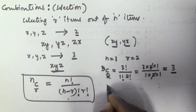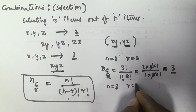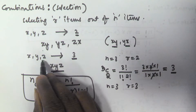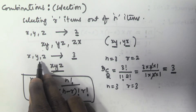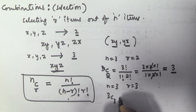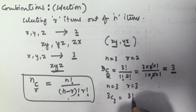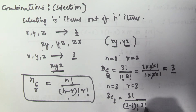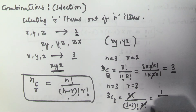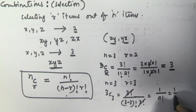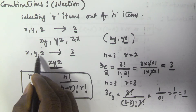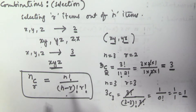Here n is 3 and r is also 3 because we are selecting 3 items out of 3 items at a time. So 3C3 equals 3 factorial divided by (3 minus 3) factorial into 3 factorial. The 3 factorials cancel and we get 1 divided by 0 factorial, which is 1. So there is only one possibility: x, y, z.